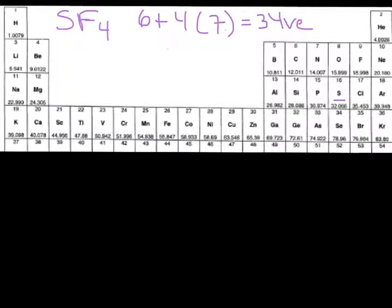So let's draw the Lewis structure. Let's go ahead and put sulfur as the central atom. I'm going to attach these fluorines, bond these guys to the sulfur. Now we're going to count the electrons we've used so far. We have 4 bonds, 2 electrons each, so that's 8 electrons used.